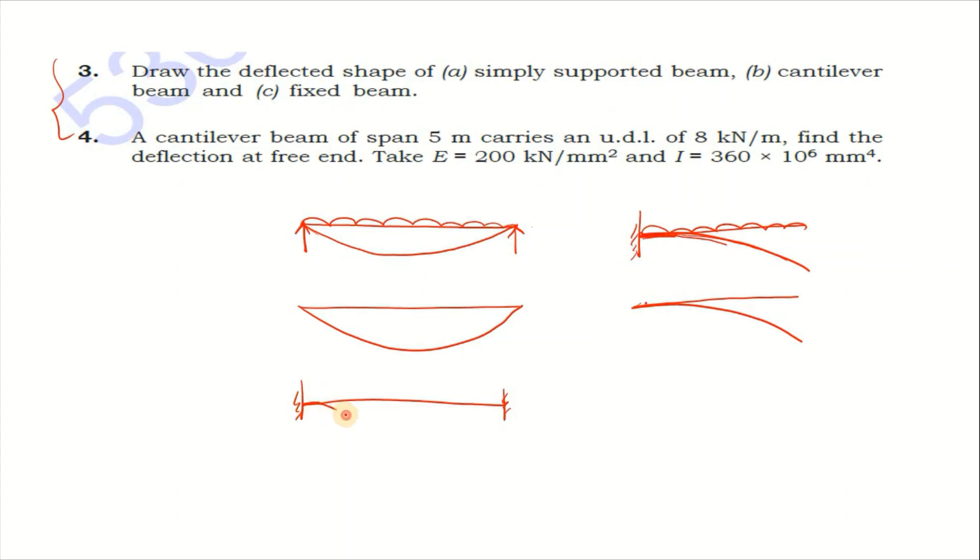For the fixed beam, both supports are fixed. Here the slope theta is 0 and the y is 0, while y is maximum at the center. Simply supported will have theta and y both maximum.